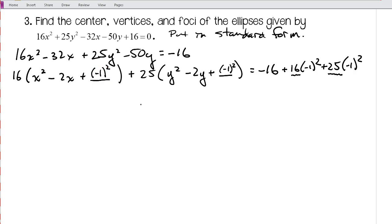All right, so moving on, I have 16 times (x - 1)² if I factor that perfect square trinomial, and then I'm going to have 25 times (y - 1)². And if I calculate all this on the other side, it's going to be 25. -1² is 1, so I have -16 + 16, so those cancel out. Again, -1² is 1, so I have 25 times 1, that simplifies to 25.